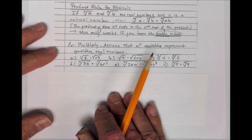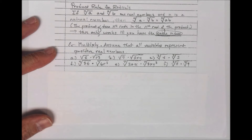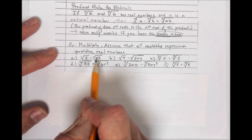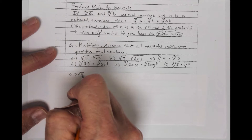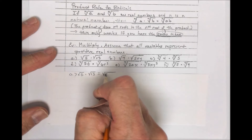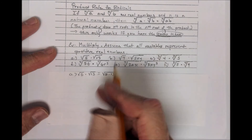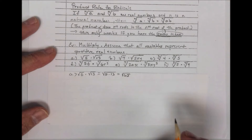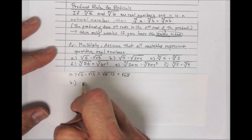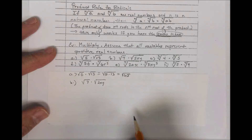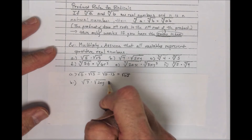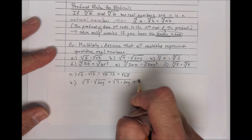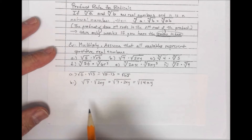Multiply — assume all variables represent positive real numbers. The square root of 5 times the square root of 13 equals the square root of 5 times 13, which is the square root of 65 — that's as far as it simplifies. For part B, the square root of 7 times the square root of 2xy: using the product rule, this is the square root of 7 times 2xy, which simplifies to the square root of 14xy. It works the same way with variables included.